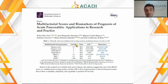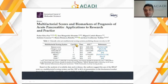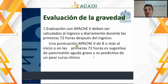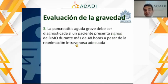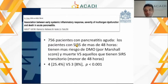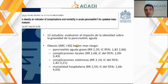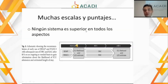Existen escalas que usan combinación de parámetros clínicos y bioquímicos, pero el área bajo la curva también es limitada. Los intensivistas usan mucho el Apache mayor de 8 para determinar qué paciente debe ir a cuidado intensivo, pero las comparaciones de las diferentes escalas de severidad no han mostrado superioridad de ninguna sobre la otra. Son importantes para determinar la presencia de disfunción orgánica severa, pero realmente son escalas que no predicen adecuadamente el comportamiento del paciente.